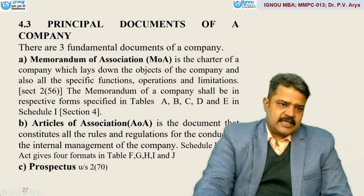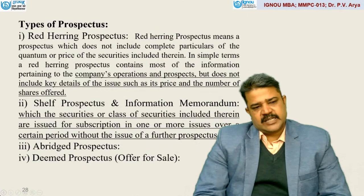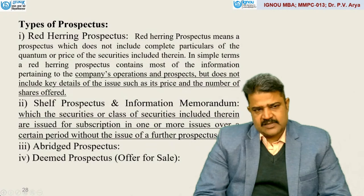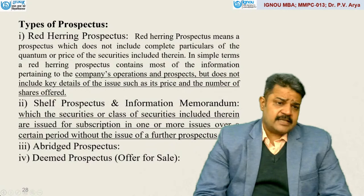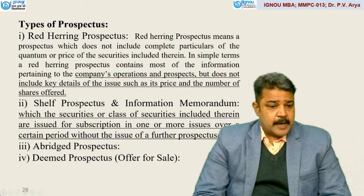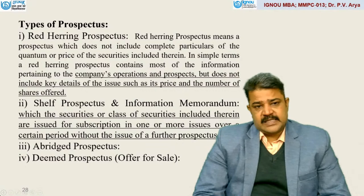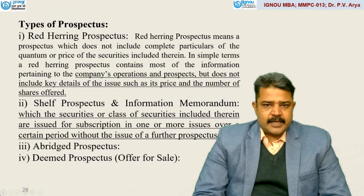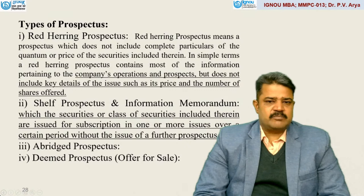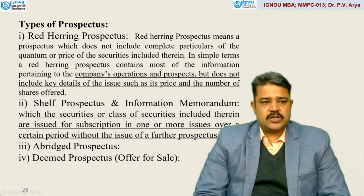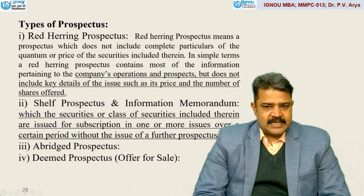As far as prospectus is concerned, it gives detail about the company. There are basically four types of prospectus: one is red herring prospectus, second is shelf prospectus and information memorandum, third is abridged prospectus, and the fourth is deemed prospectus for sale. Red herring prospectus does not include complete particulars of the quantum or price of securities included. In simple terms, red herring prospectus contains most of the information pertaining to the company's operations and prospects, but does not include key details of the issue such as its price and number of shares offered.